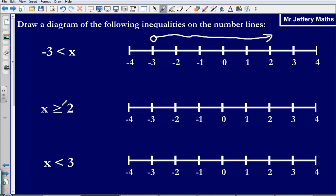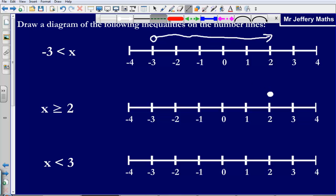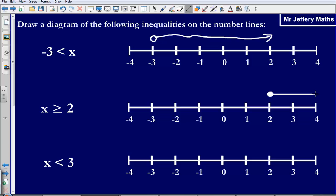Next we are told that x is greater than or equal to 2. So if it is greater than or equal to 2, x is going to be a colored in circle this time. And so what we could say is that our diagram would look something like this. So x is greater than or equal to 2 and so we would draw our diagram like that.